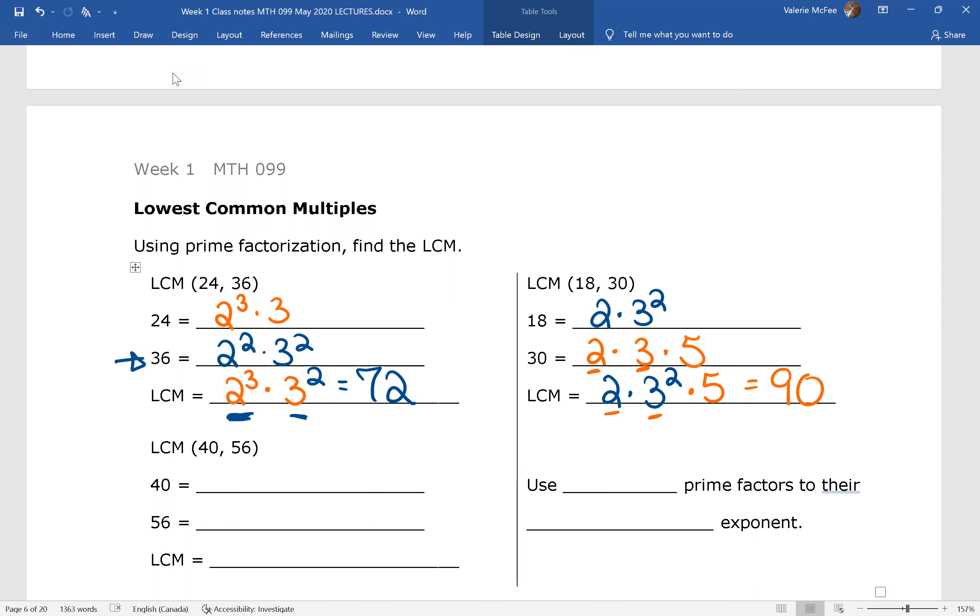Pause your video and find the lowest common multiple of 40 and 56 using prime factorization. So here we need 2 factors of 3 for both of them. 40 needs a 5. 56 also needs a 7. So what is this? I think it's 280.